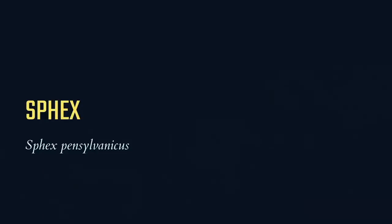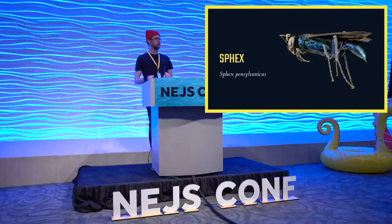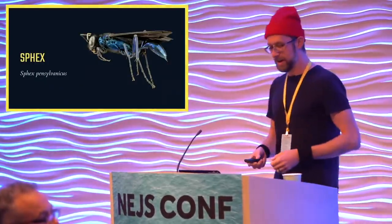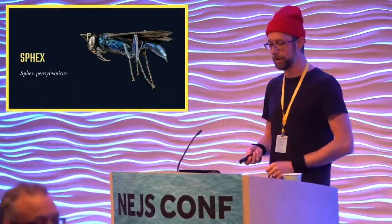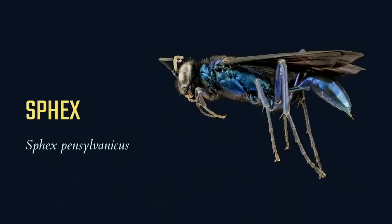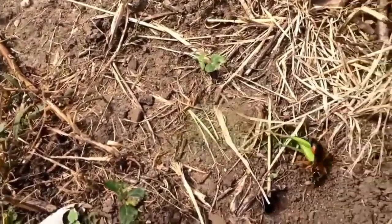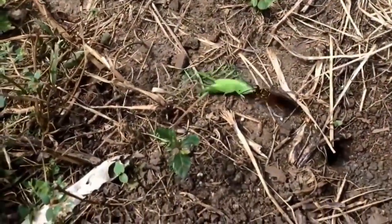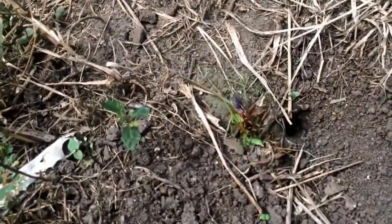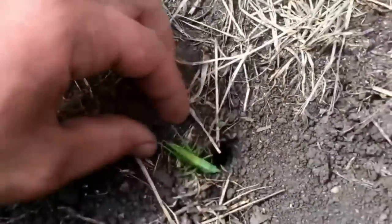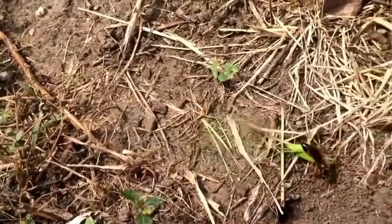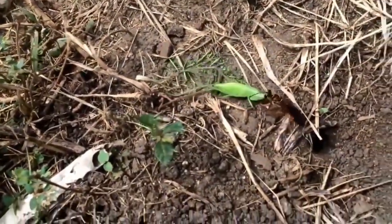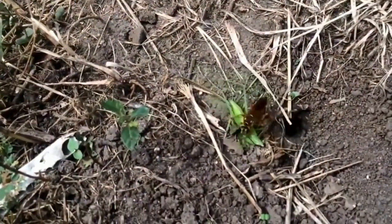The root word 'sphex' is a name for a genus of solitary wasps. These wasps don't just act in a pre-programmed fashion — they're also really easily manipulated. When wasps provision their larva with crickets, they bring the prey back to the nest, leave it outside, and go back in to inspect the nest. If an observer moves the cricket before the wasp re-emerges, it will set the cricket back and go inspect again. You can do this over and over and the wasp will never catch on.